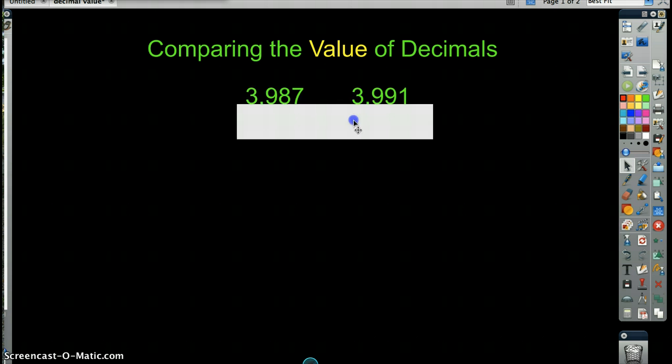So here we have 3,987 and we're comparing it to the value of 3,991. Now, most of you can do this, right? But let's pretend that we don't know how to compare these. The process would be you'd first look at the greatest place value, which in this case is the thousands column right here in this number and right here in this number. And we'd compare them.